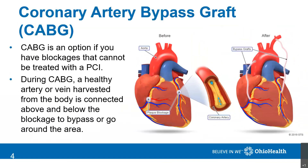Sometimes blockages are too severe or too calcified to be treated with a stent. In these cases, a more invasive procedure called a coronary artery bypass graft — commonly referred to as a CABG — may be done instead. During a CABG, a healthy artery or vein from somewhere else in the body, usually the arm or the leg, is harvested and the blood flow is rerouted around that blockage.